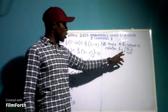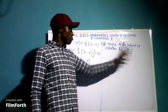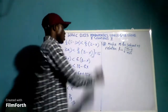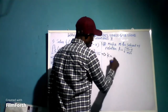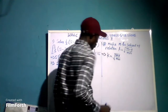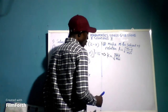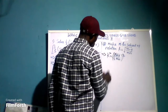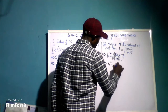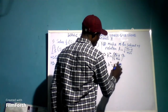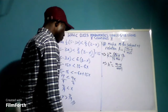Now let's take a look at question number 2. We have to make m the subject of the relation: k equals the square root of m minus y all over m plus 1. We want to make m the subject of formula in this relation.